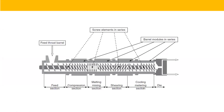As a quick recap: the conveying section had longer pitch required, the melting section was medium pitch, and the metering section was the shorter pitch required. Then we have learned about the screw flights. We also learned about the channel depth — the conveying section has a deep channel depth, and the other sections have a shallow channel depth.